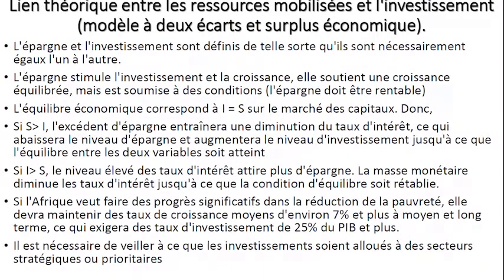Si l'investissement est supérieur à l'épargne, le niveau élevé des taux d'intérêt attire plus d'épargne et la masse monétaire diminue les taux d'intérêt jusqu'à ce que la condition d'équilibre soit rétablie. Si l'Afrique veut faire des progrès significatifs dans la réduction de la pauvreté, elle devra maintenir des taux de croissance moyens d'environ 7 % à moyen et long terme, ce qui exigera des taux d'investissement de 25 % du PIB et plus. Il est donc nécessaire de veiller à ce que les investissements soient alloués à des secteurs stratégiques ou prioritaires.